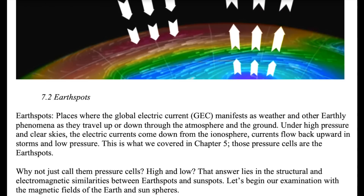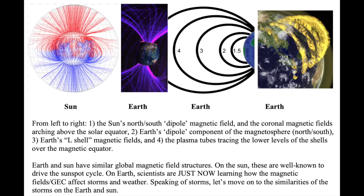Let's start with the magnetic field. The Sun has both polar fields that wrap around from pole to pole and lower-level field connections across the Sun's equator at lower latitudes called L-shells. Earth also has the pole-to-pole connecting fields and the L-shell magnetic fields across the equator connecting lower latitudes.